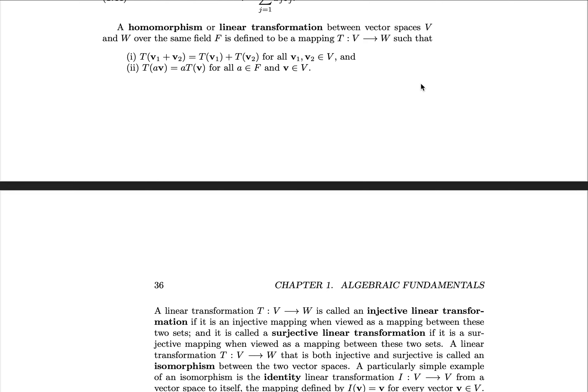We say that a homomorphism, or linear transformation, between vector spaces V and W over the same field F is defined to be a mapping T from V to W such that it is linear: T of V1 plus V2 equals T of V1 plus T of V2 for all V1 and V2 in V, and T of A times V equals A times T of V for all A in F and V in V.